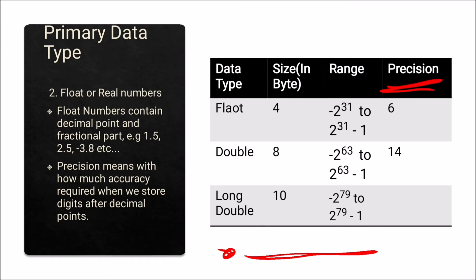The sizes are different: float is 4 bytes, double is 8 bytes, and long double is 10 bytes. The range for float is minus 2 raised to 31 to 2 raised to 31 minus 1; for double it is minus 2 raised to 63 to 2 raised to 63 minus 1; and for long double it is minus 2 raised to 79 to 2 raised to 79 minus 1. Precision for float is 6 decimal places, and for double it is 14 decimal places.